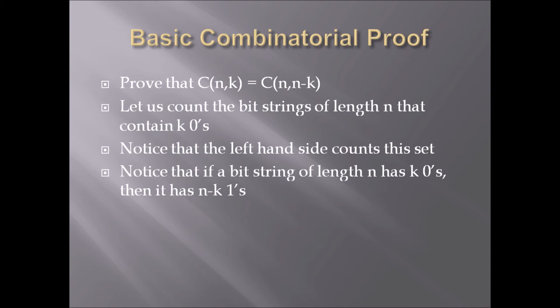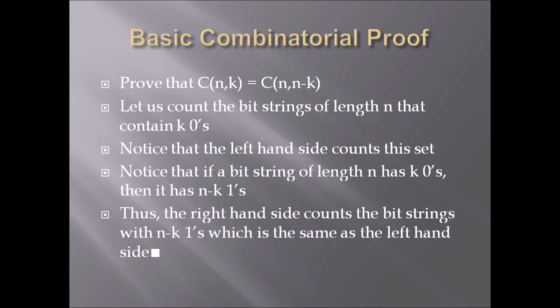Because if something's not a zero, then it's a one. So there are n-k ones. So the set of bitstrings with k zeros is the same as the set of bitstrings with n-k ones. Thus, the right-hand side counts the bitstrings with n-k ones, which is the same as the left-hand side. We count the left-hand and right-hand side in two different ways to show that the equality holds. And that proves this combinatorial identity.